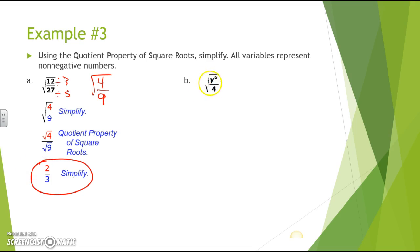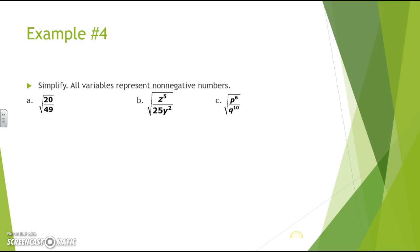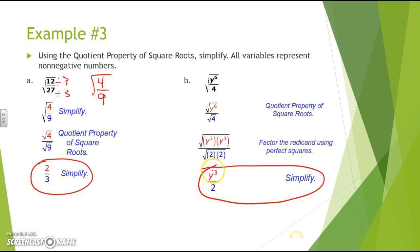For part b, we have the square root of y to the sixth over 4. Using the quotient property of square roots, we take the square root of y to the sixth over the square root of 4. Taking the square root of y to the sixth, we divide 6 by 2 to get y to the third times y to the third, over the square root of 4, which is 2. So this simplifies to y to the third over 2. That is my answer.